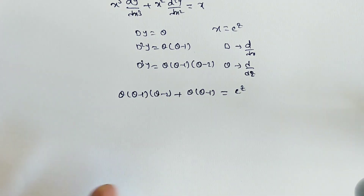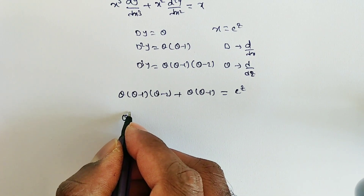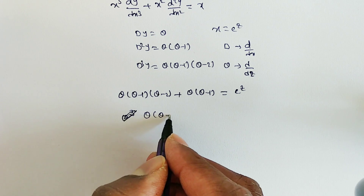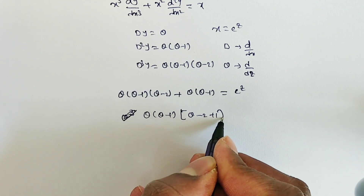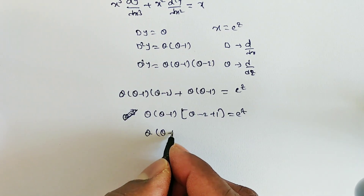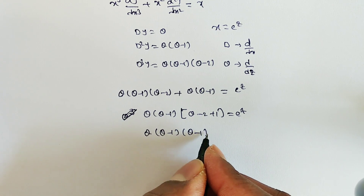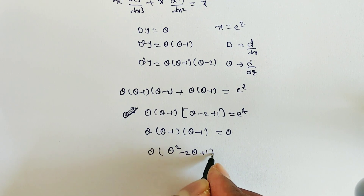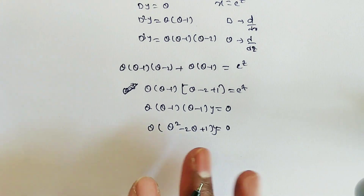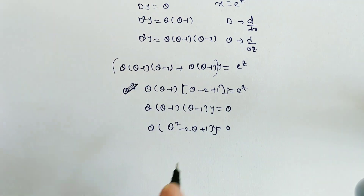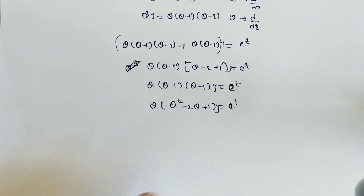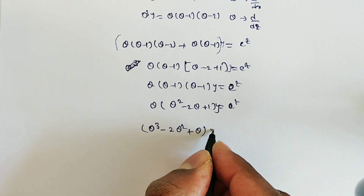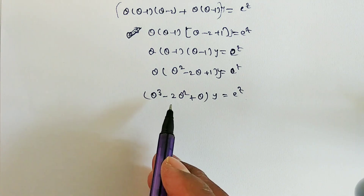Expanding θ(θ-1)²: θ(θ² - 2θ + 1) = θ³ - 2θ² + θ. So the transformed equation is (θ³ - 2θ² + θ)·y = eᶻ. We have now converted the variable coefficient equation into a constant coefficient equation in terms of z, and will solve for the complementary function and particular integral.